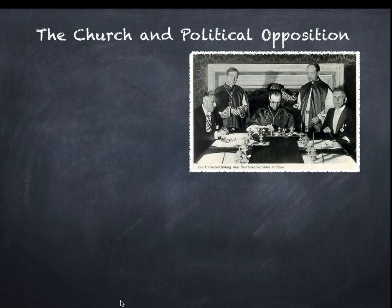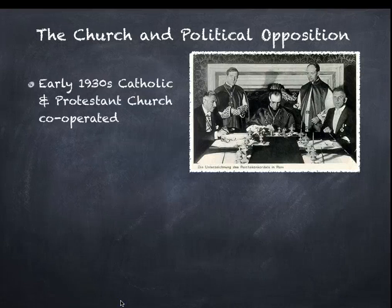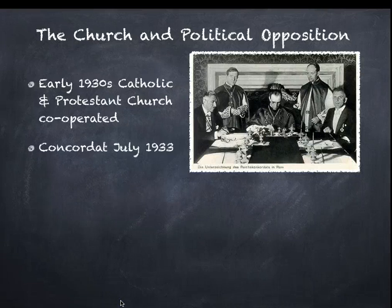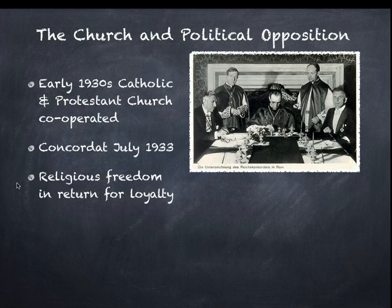You would think that churches — remember there's the Catholic Church, mostly in southern Germany, and Protestant churches in more northern Germany — if they're obeying the teachings of Jesus about non-violence and being compassionate and caring for people, then they should really be against the Nazi Party and everything it stands for. However, in the early 1930s, both the Catholic and Protestant churches did cooperate, largely through fear and intimidation. A Concordat was signed in July 1933 between the Pope in Rome and the Nazi Party, which was supposed to guarantee religious freedom in return for loyalty, or at least non-criticism of the Nazi Party.